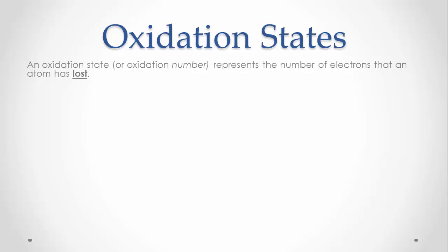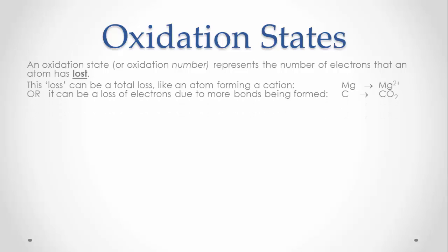There are two types of loss this could include: a total loss of electrons from an atom, like when a metal atom such as magnesium forms a cation by losing electrons — an idea introduced in year 11 — or a loss of electrons due to them being used in forming bonds with other atoms, like when carbon uses its four valence electrons to form four covalent bonds with oxygen when forming a molecule of carbon dioxide.